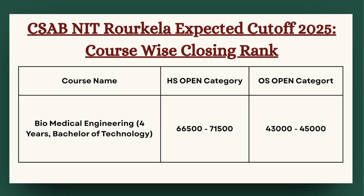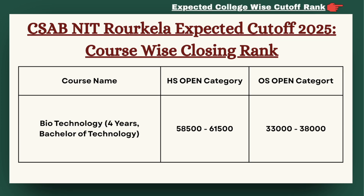Next we have Biomedical Engineering. For HS open category, the cutoff can be expected between 66,500 to 71,500, and for OS category the cutoff can be expected between 43,000 to 45,000.